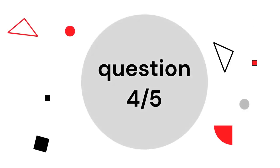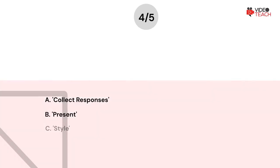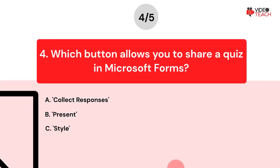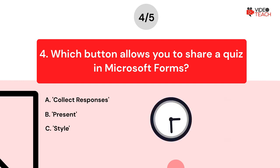Question number four. Which button allows you to share a quiz in Microsoft Forms? Option A: Collect Responses. Option B: Present. Option C: Style. Now you have about 15 seconds to think about your answer.